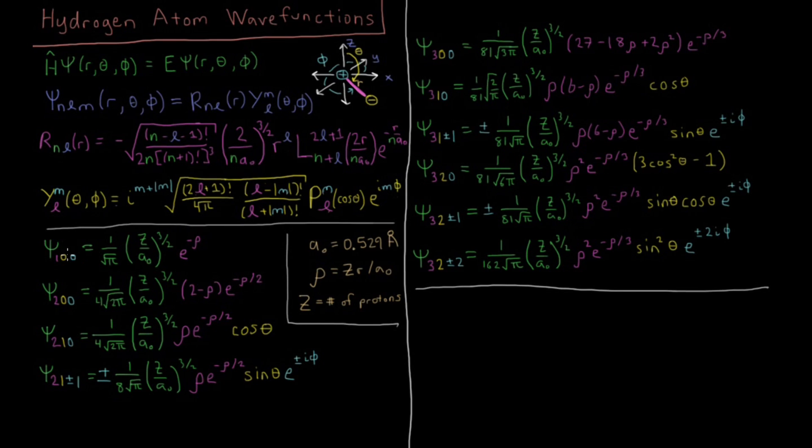For psi_100, that's just an exponential which starts at some value at r equals 0 and decays away. There's no angular part, so that is the same as we saw for the radial plots. This is actually the 1s orbital. That's the only wave function for n equals 1. Then for n equals 2, we can have l equals 0 and m equals 0, which gives us a function with one radial node before infinity. This is the 2s orbital.